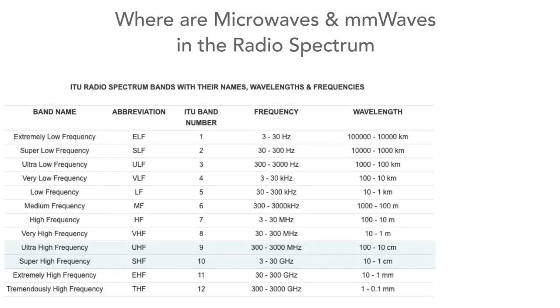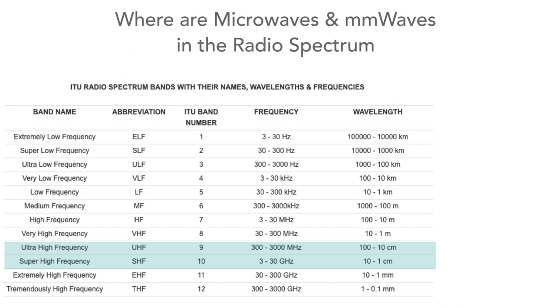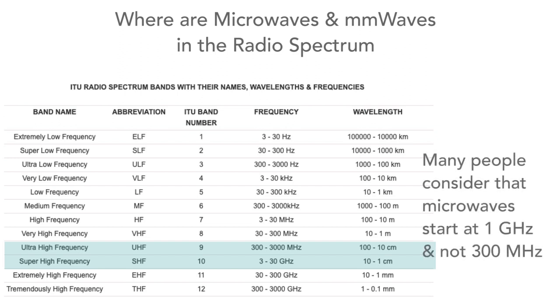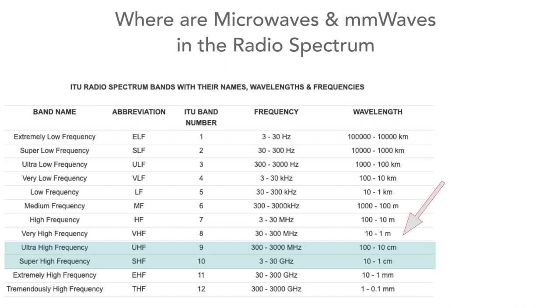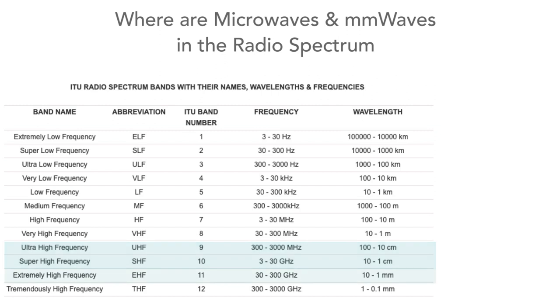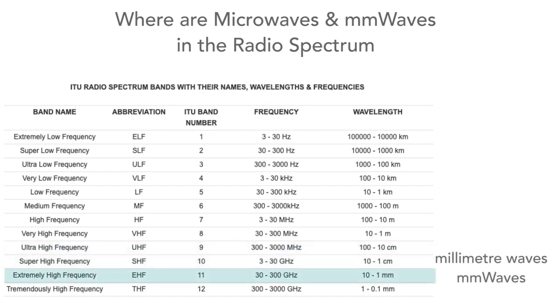Microwaves and millimeter waves are located between about 300 megahertz and 300 gigahertz. It's worth getting a feel for where they're found in relation to other sections of the radio spectrum. Although the strict definition means microwaves start at 300 megahertz, people tend to use the term for frequencies starting around a gigahertz or more. Microwaves are well above the AM broadcast bands and the long, medium, and short waves, and also above the VHF bands used for FM broadcasting, some television, and point-to-point communications. Above the microwave section we find millimeter waves, between 30 and 300 gigahertz, where signal wavelengths are measured in millimeters.